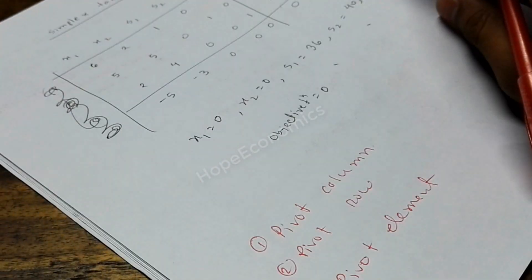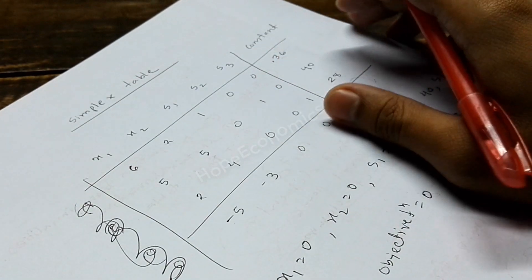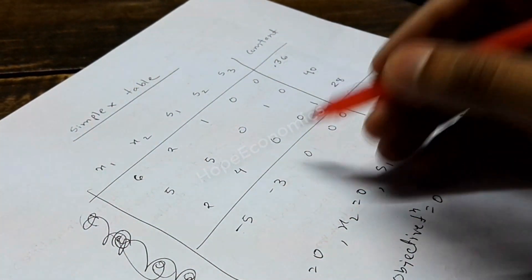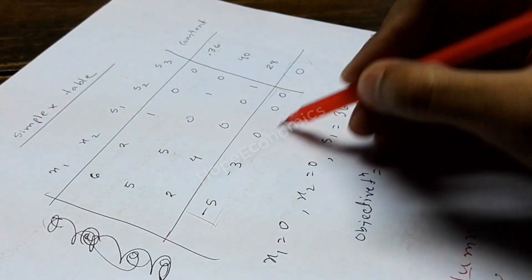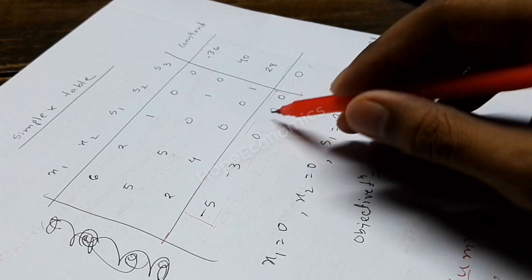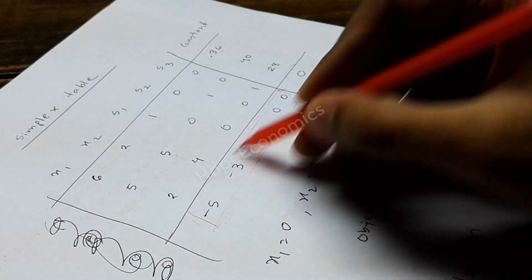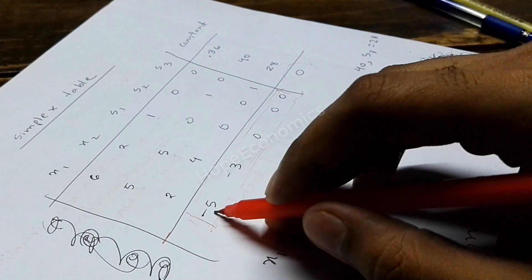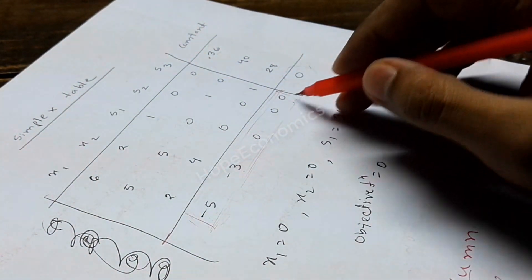First, let's find the pivot column. Consider this table as our initial table. From our initial table, to find the pivot column, we have to look at these values — we have to check them for the largest absolute value with a negative indicator. We can see that minus five and minus three are the values with negative indicators, and the rest are zero, so we avoid those zeros.